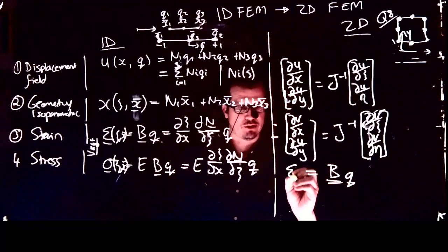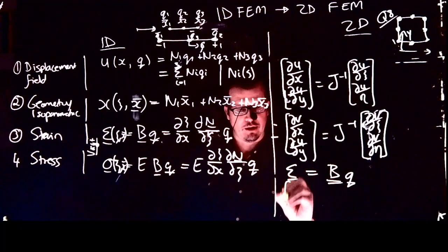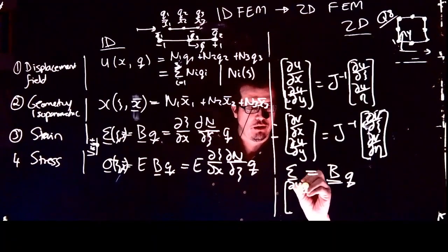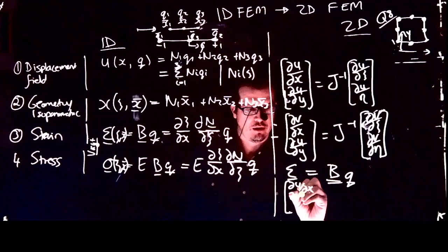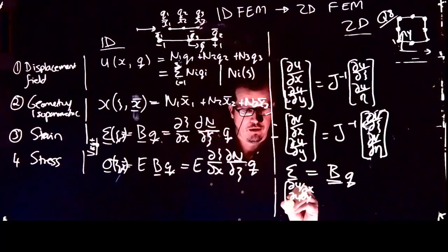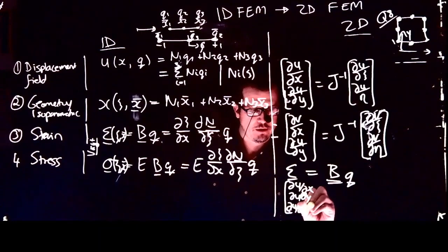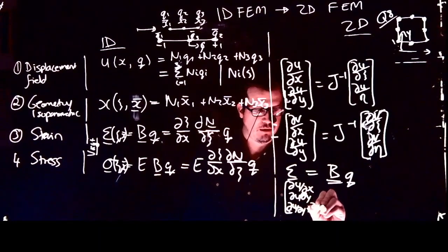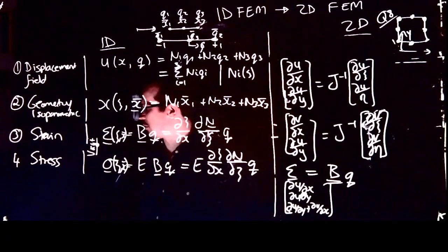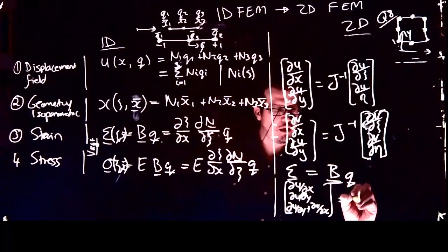The strain is a 3×1 vector, so the strain components are just u_x, v_y, and u_y plus v_x. That's what we have there — that's the strain vector equal to some B matrix times some q vector.